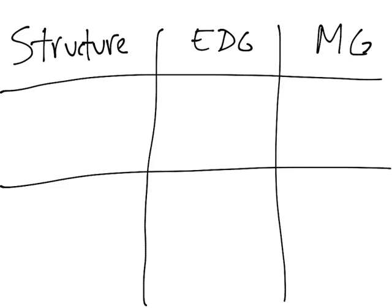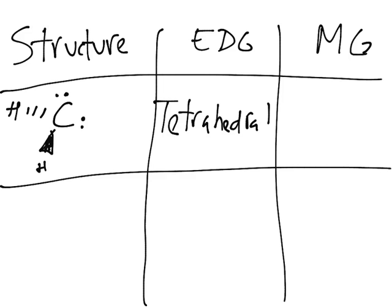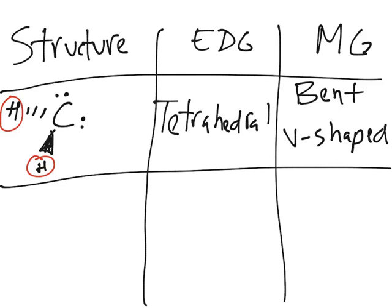The third case: we only have two hydrogens bonded to the carbon, with two lone electron pairs — one pointing in and one pointing out. The EDG stays the same: tetrahedral. But the molecular geometry, with only two atoms bonded to the central atom, is called a bent geometry, also called V-shaped. The V-shaped name is easier to remember because it just looks like a V.